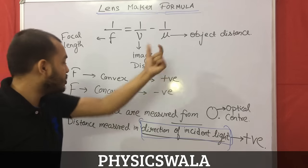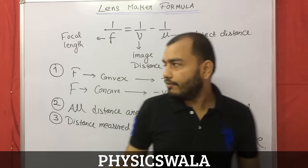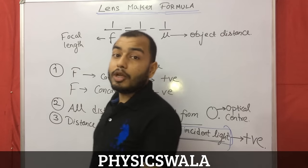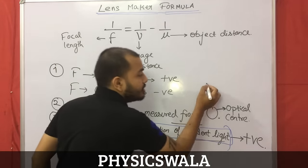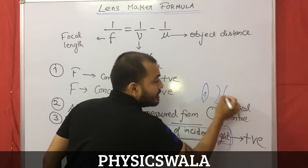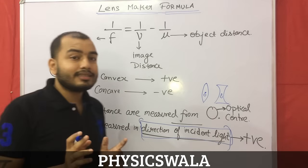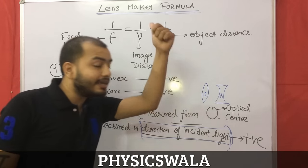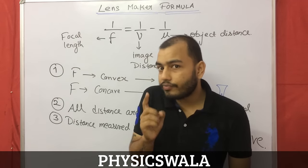So to recap: rule number one — convex lens focal length positive, concave lens focal length negative. Rule number two — all distances are measured from the optical center. Rule number three — all distances measured in the direction of incident light are positive.